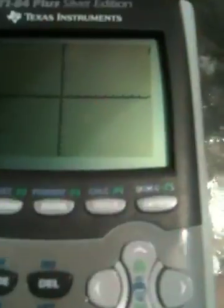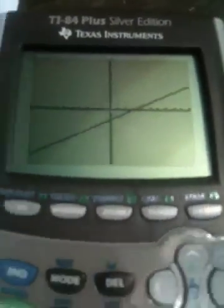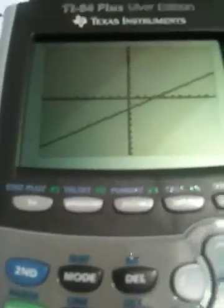Okay and now let's push graph. And there is our line. It's a line that has a positive slope up 2 over 3. The y intercept of the line is negative 2.